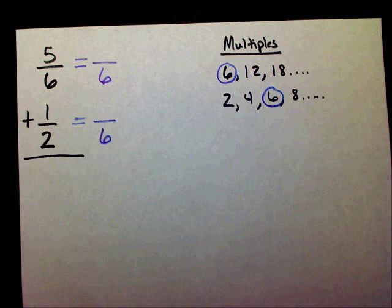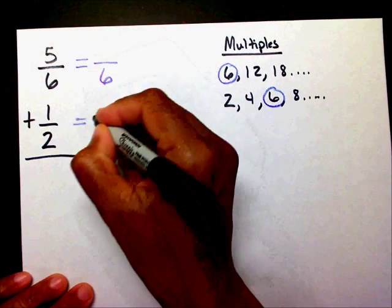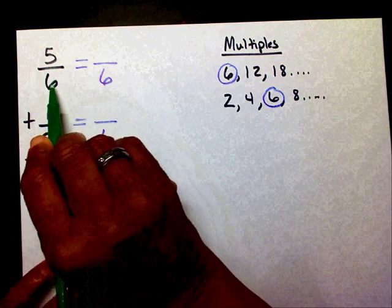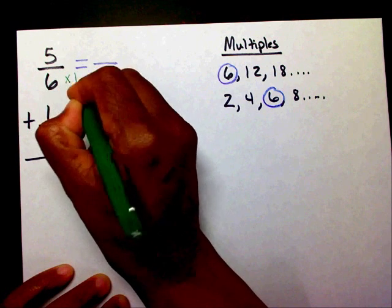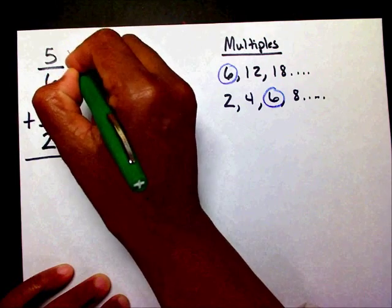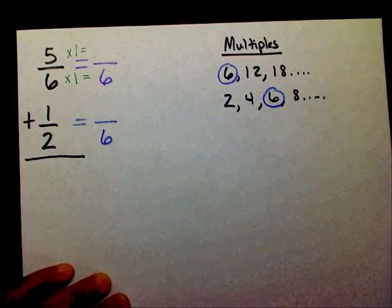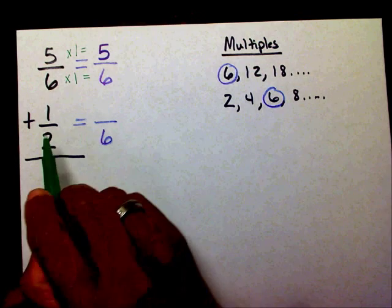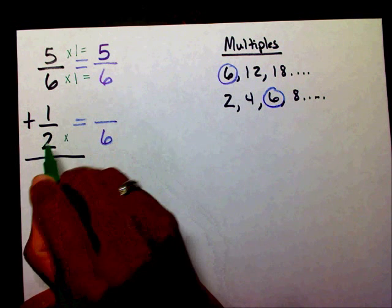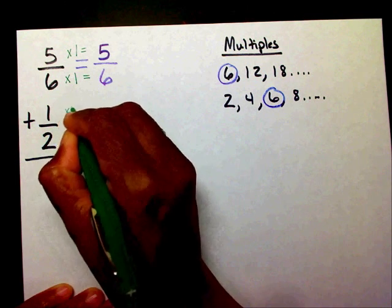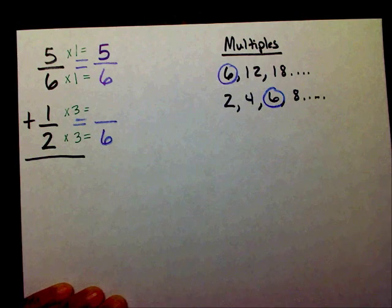Now that I know my new denominator is going to be 6, I need to find my new numerators. I know that 6 times 1 equals 6. Whenever I multiply in the denominator, I have to multiply in my numerator. So 5 times 1 is going to be 5. I know that 2 times 3 equals 6, and so if I multiply by 3 on the bottom, I have to multiply by 3 on the top. So that's going to be 1 times 3, which is 3.